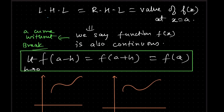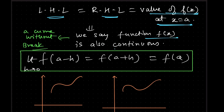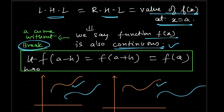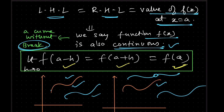If the left-hand limit and the right-hand limit are equal, and also the value of the function f(x) at x equal to a is equal to the limits, then we can say that the function f(x) is continuous. Continuous means the function does not have any break — no missing points. The condition for a continuous function is that the left-hand limit, right-hand limit, and the value of the function at point x equal to a must all be equal.